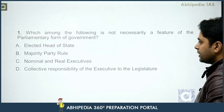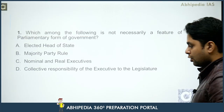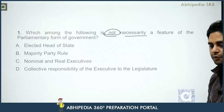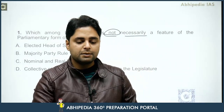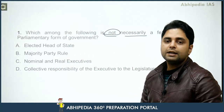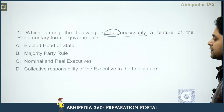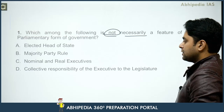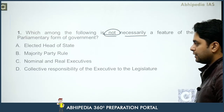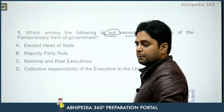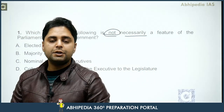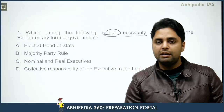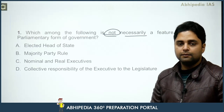First question: which among the following is not necessarily a feature of the parliamentary form of government? In India we follow the parliamentary system of government. In mein se kaun sa zaruri nahi hai ki uska ek feature ho. Options: one, elected head of state; two, majority party rule; three, nominal and real executives; four, collective responsibility of the executive to the legislature. In mein se kaun sa zaruri nahi hai ki parliamentary form of government ka feature ho? Baaki teen jo hain, they have to be there in any parliamentary system. So what is the answer?